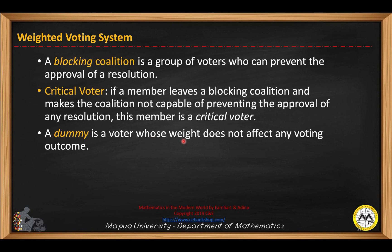A dummy is a voter whose weight does not affect any voting outcome. And the number of possible coalitions you can make out of n voters will be 2^n minus 1.